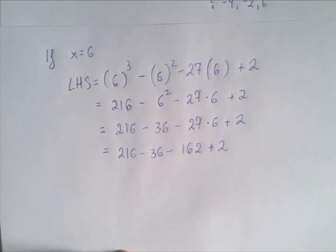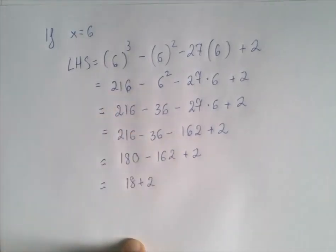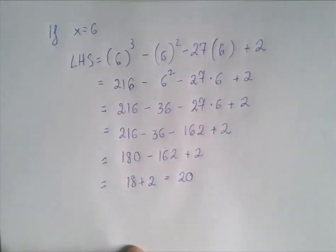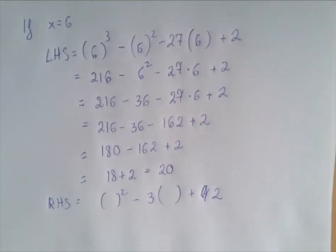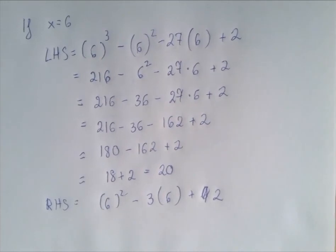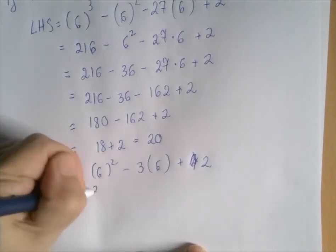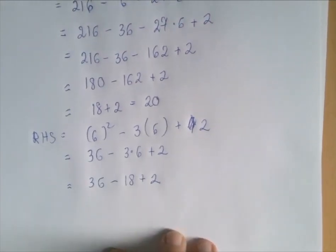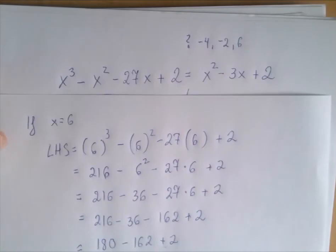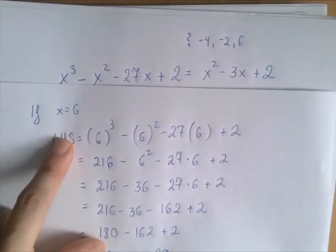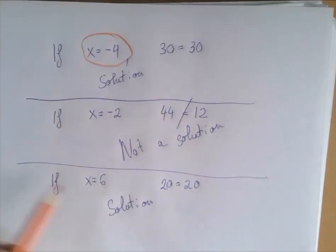Left to right: 216 minus 36 is 180, 180 minus 162 is 18, and 18 plus 2 is 20. So if x equals 6, the left-hand side is 20. The right-hand side is x squared minus 3x plus 2. Substituting 6: 6 squared is 36, then 3 times 6 is 18. Subtracting: 36 minus 18 is 18, and 18 plus 2 is 20. Both the left-hand side and the right-hand side are 20, so x equals 6 is a solution of this equation.